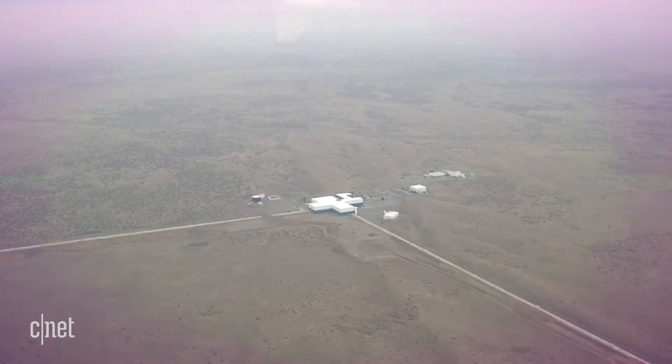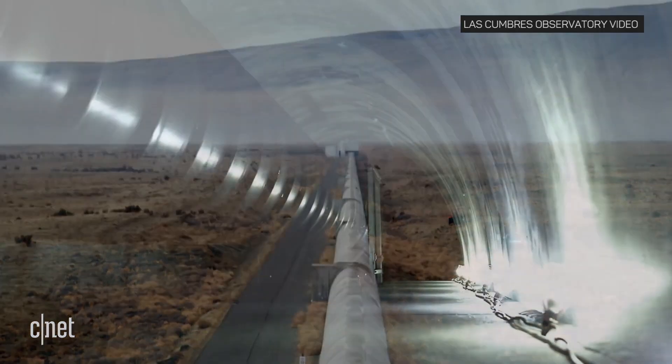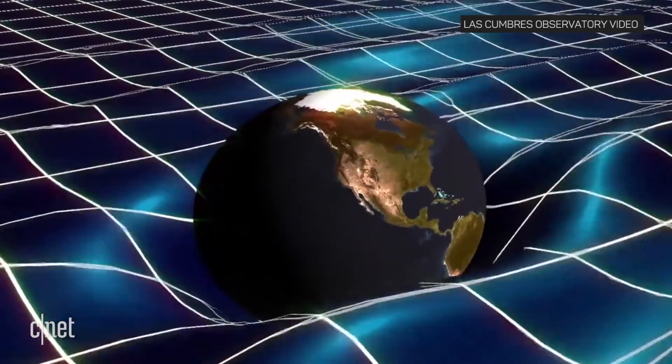Three massive gravitational wave detectors located in Washington State, Louisiana, and Italy detected gravitational waves passing through the Earth.